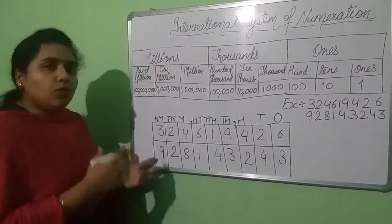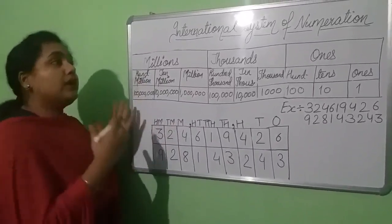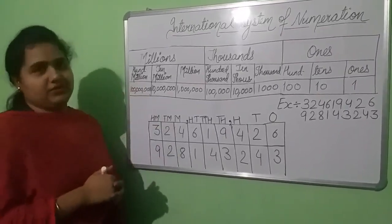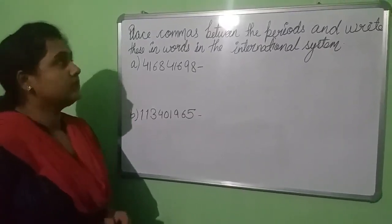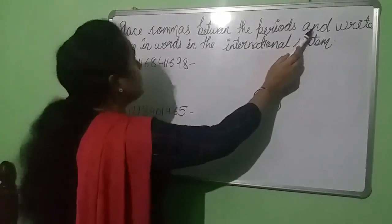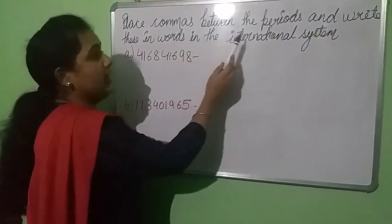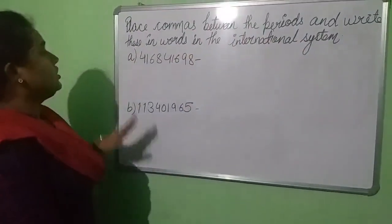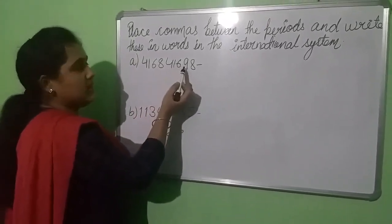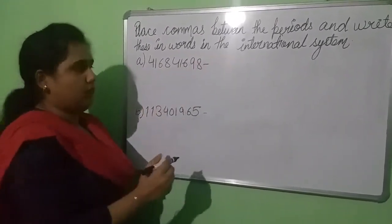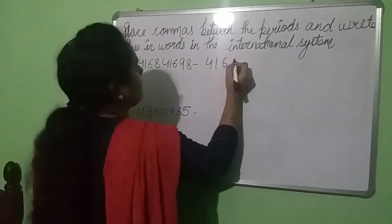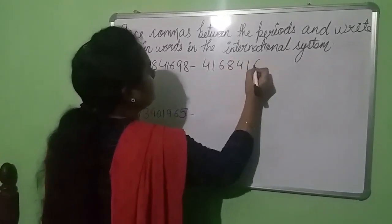Let's do some more questions related to this topic, which will help you to understand how we can easily read and write any number in the international system of numeration. The question is: place commas between the periods and write these in words in the international system. The first number is 41,68,41,698.